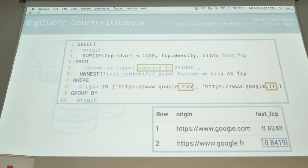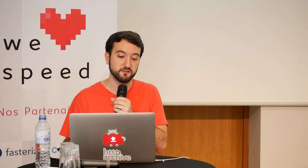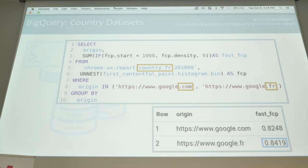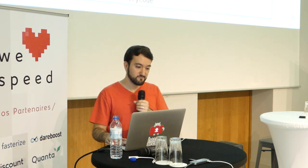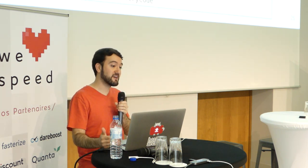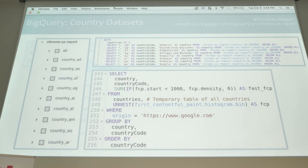We can monitor this trend each month to see how the health of the web is changing. I also mentioned geography in the dataset as well — we can analyze performance within a specific country. Here we're comparing how Google performs in France on .com and .fr TLDs, and it turns out that users experience more fast FCPs on .fr.